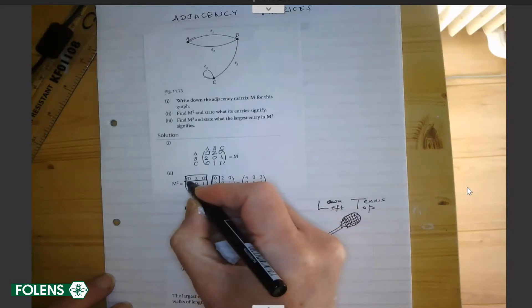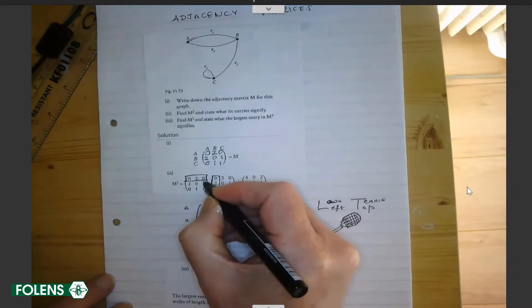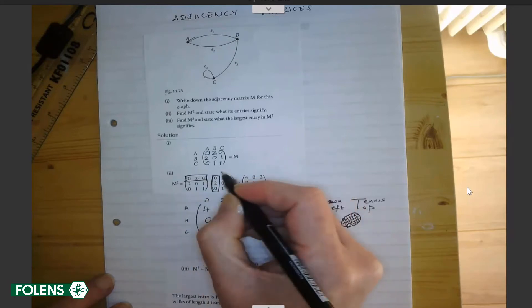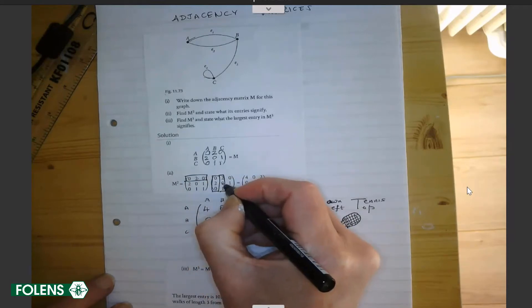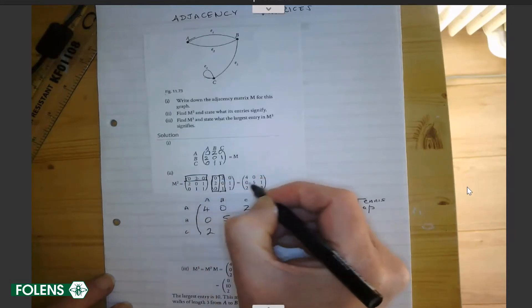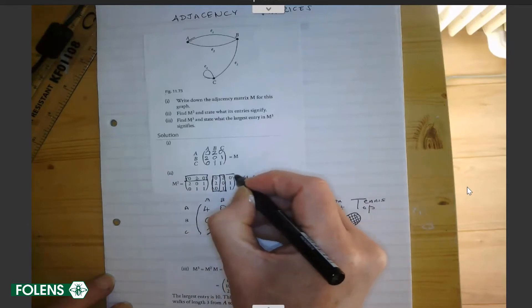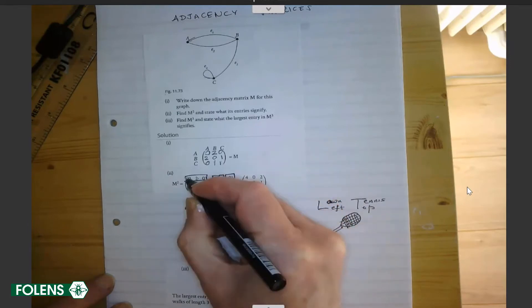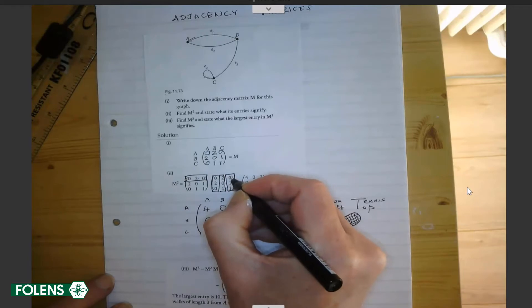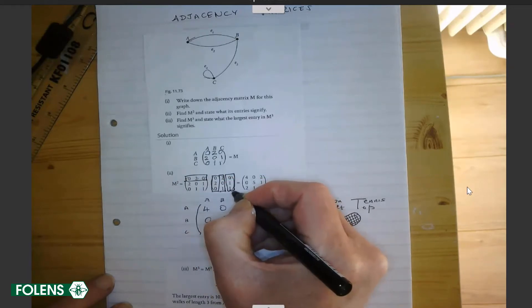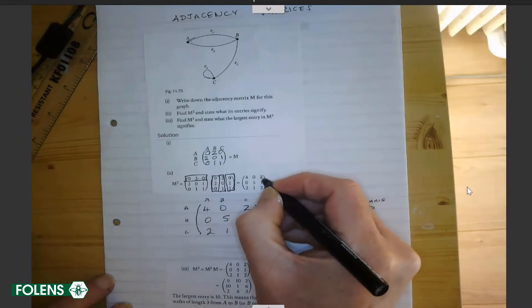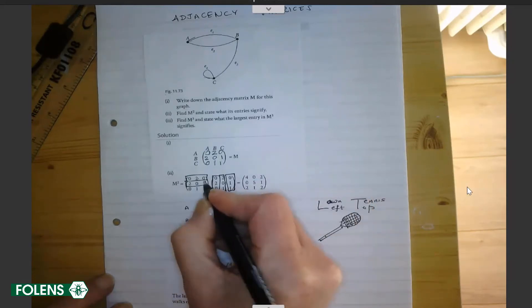You run along the diving board and then splash. You look at that row and that column. You multiply the first by the first, the second by the second, and the third by the third. Zero and four and two gives you four. Then you take the same diving board and dive splish splash. Zero by zero, two by zero is zero, zero by one is zero. Total zero. Then you do the next dive. Zero by zero is zero, two by one is two, zero by one is zero. Total two.